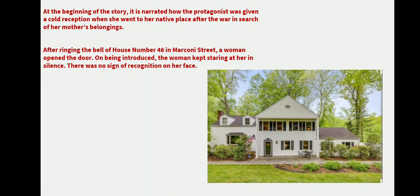At the beginning of the story it is narrated how the protagonist was given a cold reception when she went to her native place after the war in search of her mother's belongings. The narrator, a girl, goes to house number 46 Marconi Street. On the name plate outside she sees 'Mrs. Doling' - the correct name - and that is the address she needed. When she arrives, a woman opens the door and stares at her repeatedly as if she does not recognize her.